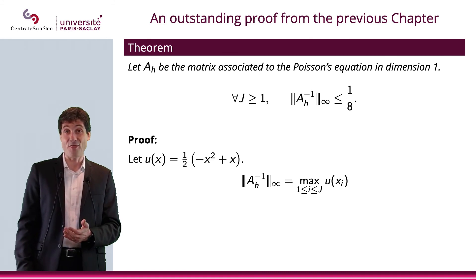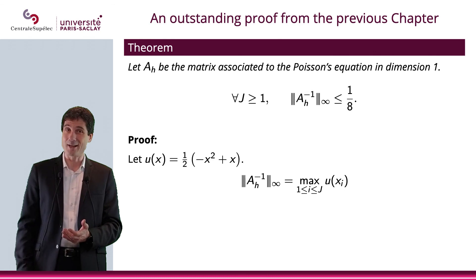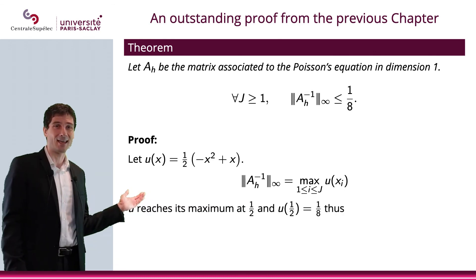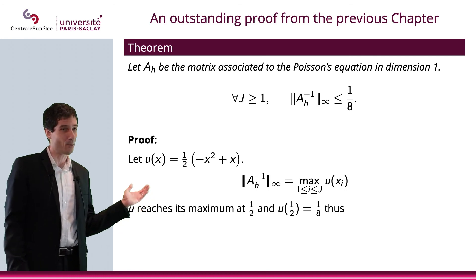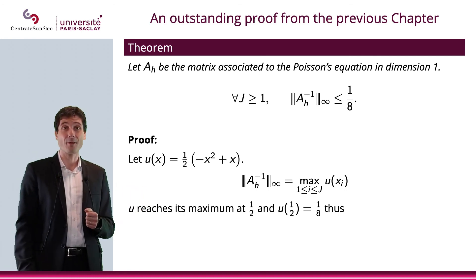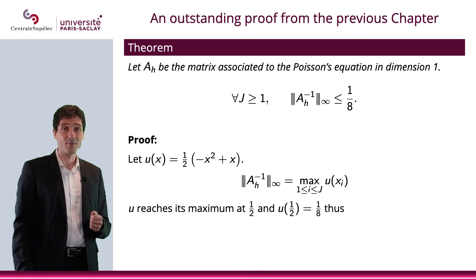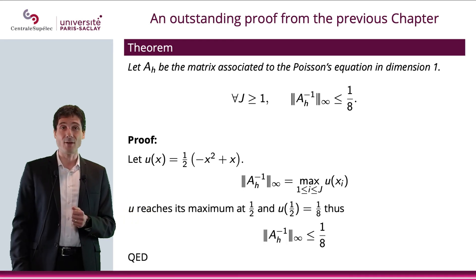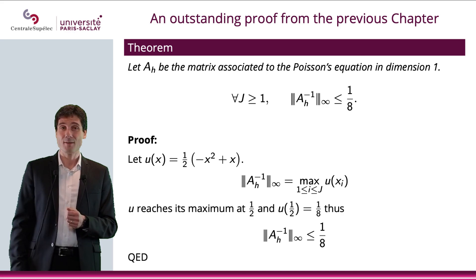Oh, well, at this point, I think that we can figure out what is this maximum, can't we? I mean, we have a polynomial of degree 2, which reaches its maximum at 1 half and the maximum is 1 half. So what we have is that the norm infinity of A_H inverse is smaller than 1 half.